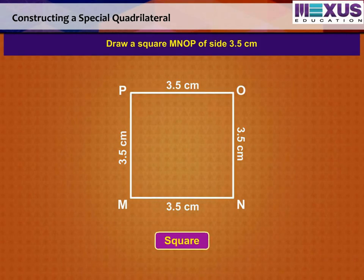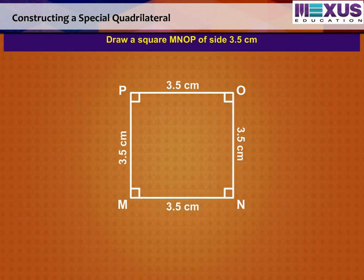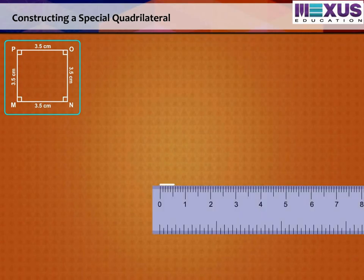We know that each of its angles is a right angle. This enables us to draw a triangle MNO using SAS condition. Then, P can be easily located. Now, let us try to draw the square with the given measurements.